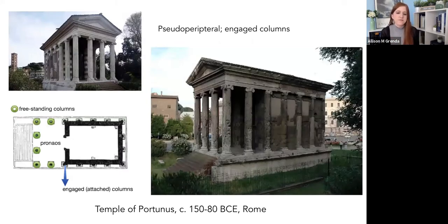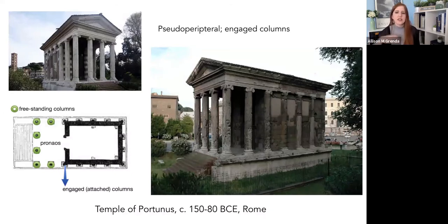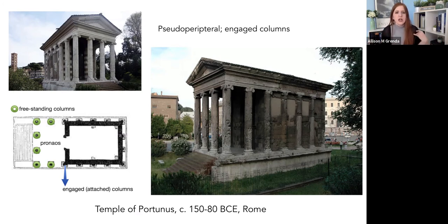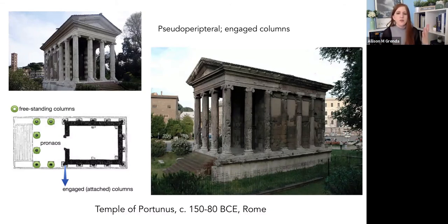The first temple we'll look at is the Temple of Portunus. The date is debated — it could be as early as 150 or as late as 80 BC — but it is a late Republican temple. It combines everything we've seen so far: Etruscan and Greek elements. The fact that it combines these two cultures so distinctively makes it very Roman — it makes it its own style. We're taking elements from other traditions and at this point it's not one or the other. This is really the first sort of purely Roman temple in the late Republic and imperial sense of the word.